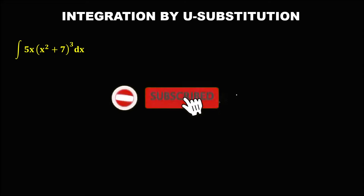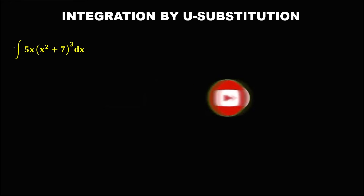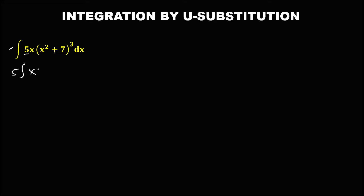So let's have this problem. For this integration by u-substitution, for this given, first we need to put this constant outside. So we have 5, then the integral of x times the quantity of x squared plus 7 to the power 3, then dx.